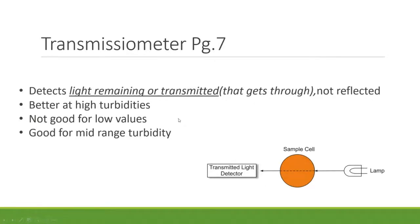The second type is the Transmissiometer, which detects the light remaining — the light that actually gets through rather than reflected. Unlike the other types that use reflective angles, this one measures transmitted light directly. These are better at high turbidities but not very good for low values, making them a good general mid-range device.